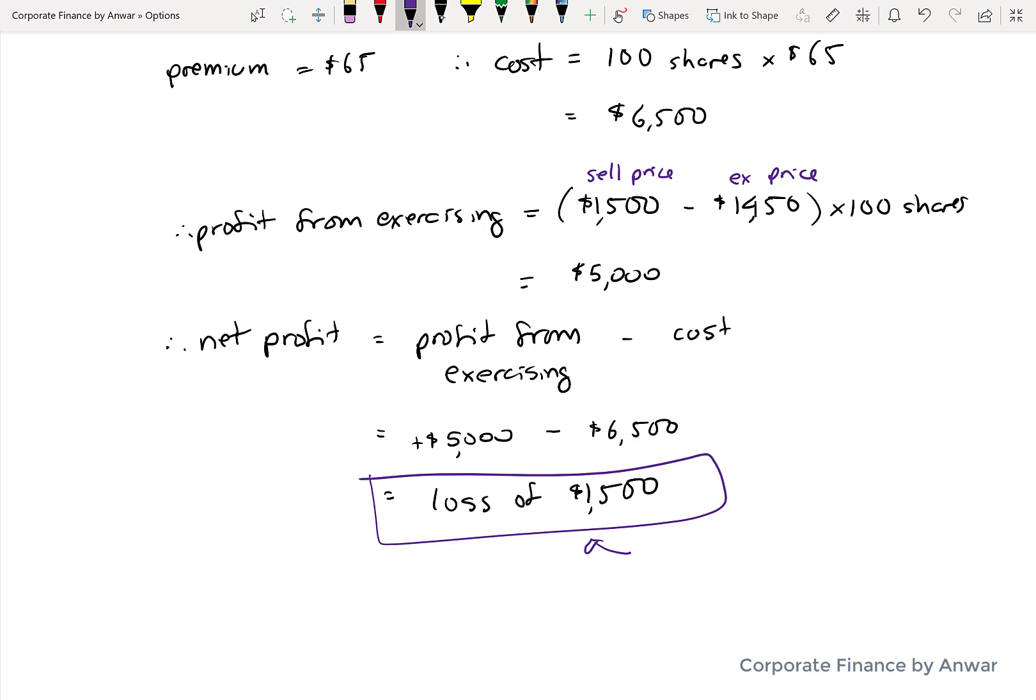So the writer, whoever sells the option, will have the exact opposite experience. The writer will have a gain of $1,500. It's a zero sum game. Whatever one loses, the other one will make up. So the loss is for the holder.